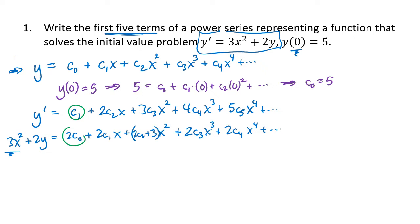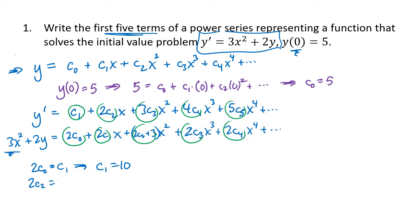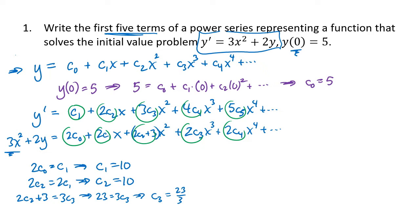Now I equate coefficients of equal powers of x. The constant term gives c₁ = 2c₀, so c₁ = 10. The x term gives 2c₂ = 2c₁, so c₂ = c₁ = 10. The x² term gives 3c₃ = 2c₂ + 3 = 23, so c₃ = 23/3. The x³ term gives 4c₄ = 2c₃, so c₄ = ½ · (23/3) = 23/6.